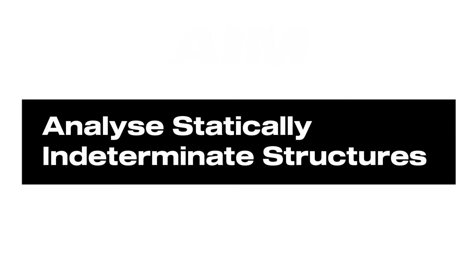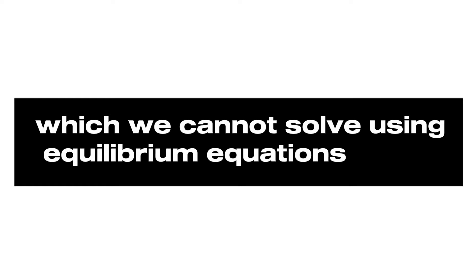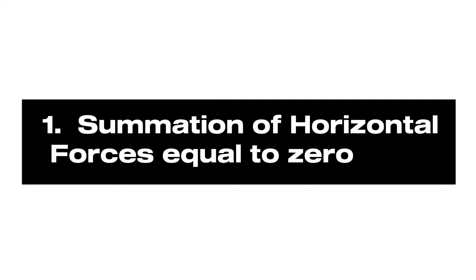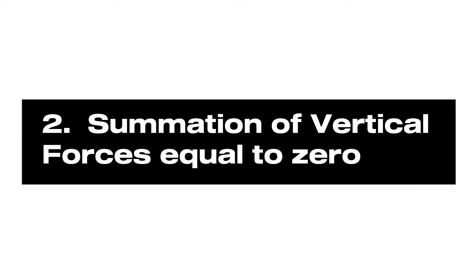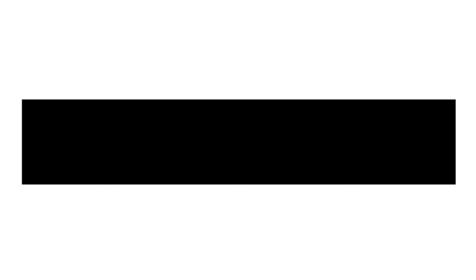The main aim of the stiffness method is to solve statically indeterminate structures, which we cannot solve using ordinary methods. These ordinary methods are equations of equilibrium. In two-dimensional space you have three equations: summation of horizontal forces equal to zero, summation of vertical forces equal to zero, and summation of moments equal to zero. If a structure has more than three unknowns, you cannot solve it using equilibrium equations.